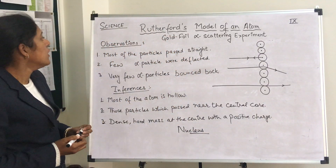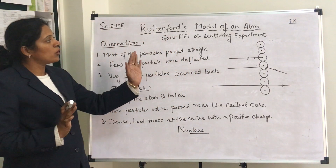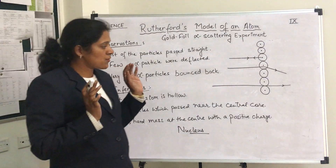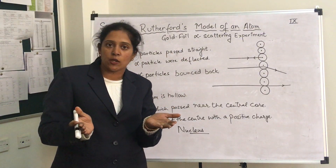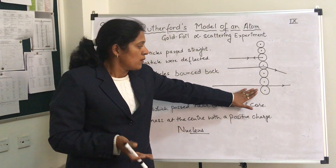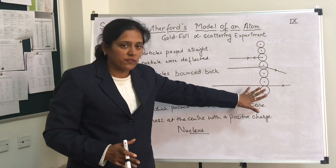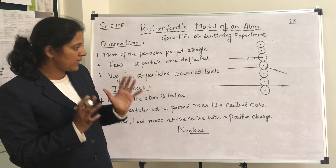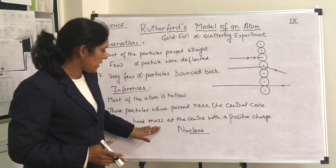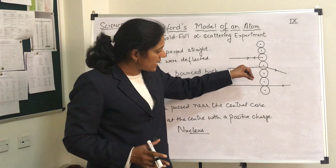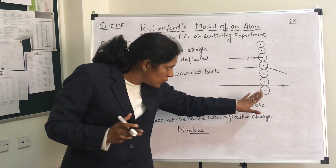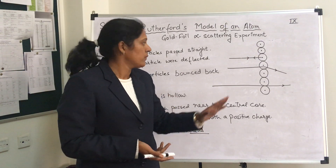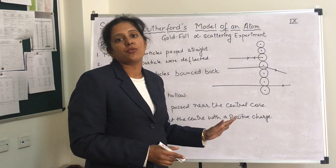The central core is the nucleus. On the basis of this gold foil alpha scattering experiment, Rutherford gave his model of the atom, which states that the atom is a spherical body where most of the spaces are hollow. But the central part of the atom — the nucleus — is a dense, hard, heavy mass at the center of the atom, and the size of the nucleus is very small compared to the size of the atom. The atom on the whole is electrically neutral.